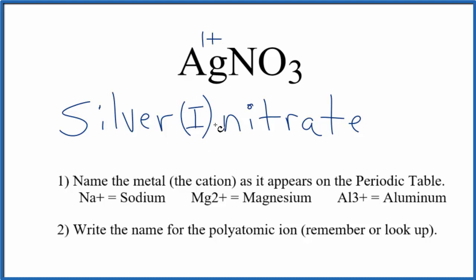Silver 1 nitrate. If you were to write the formula given this name, you know silver has a 1 plus ionic charge. The whole nitrate ion has a 1 minus. So the 1 nitrate and the 1 silver, their charges balance out.